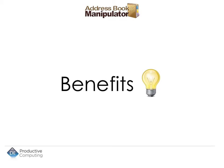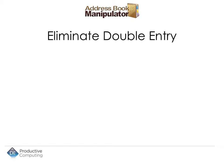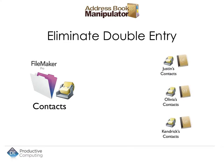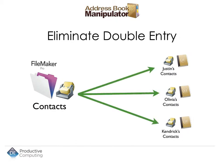Let's discuss a few of the benefits when using the AddressBook Manipulator plugin. First, we can eliminate double entry. An organization traditionally stores their contacts within a FileMaker Pro database. This same organization has users who also store a set of contacts in Apple AddressBook, allowing them to keep a local copy of contacts for their off-site use or to sync with their mobile devices. You can use the plugin to eliminate double entry and update your users' Apple AddressBook, keeping everyone's contacts up to date and accurate.